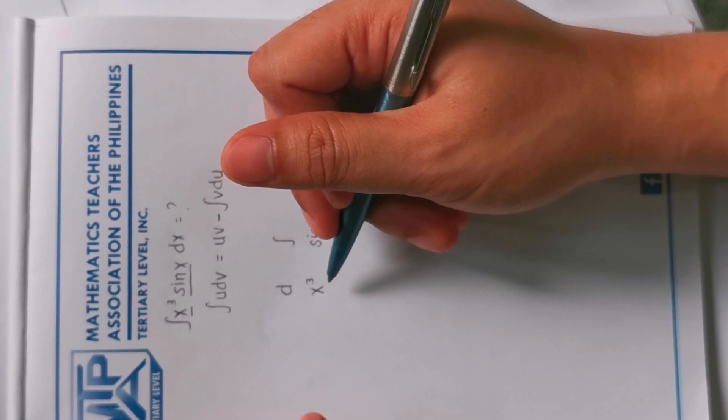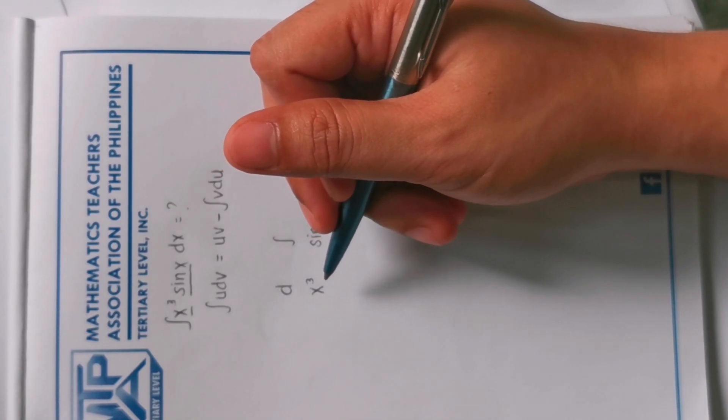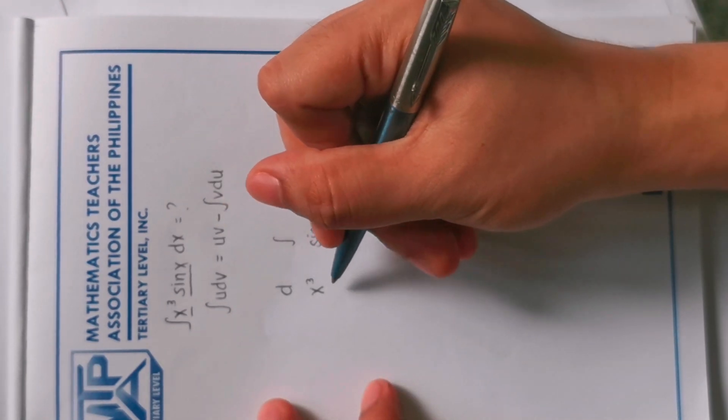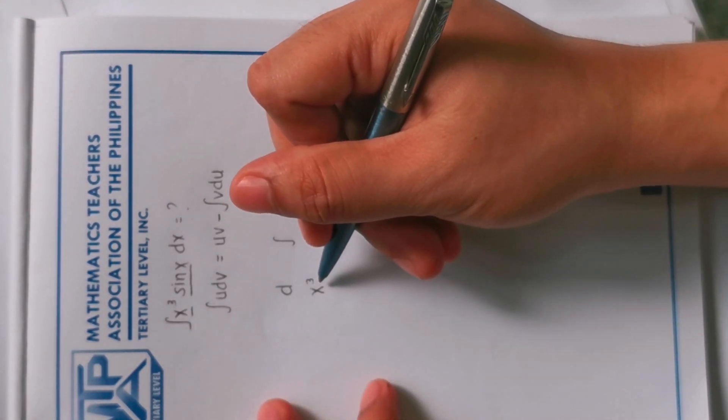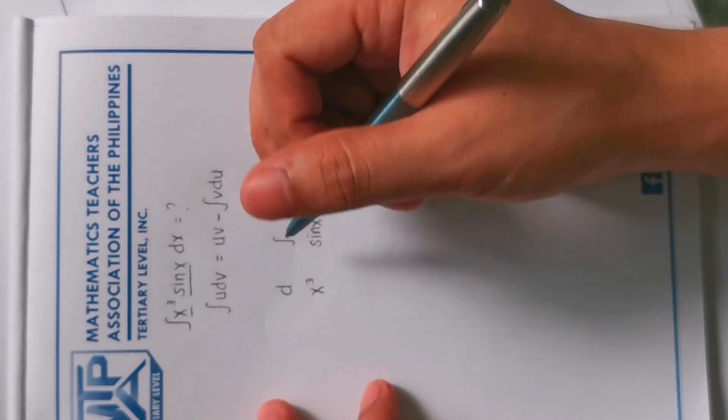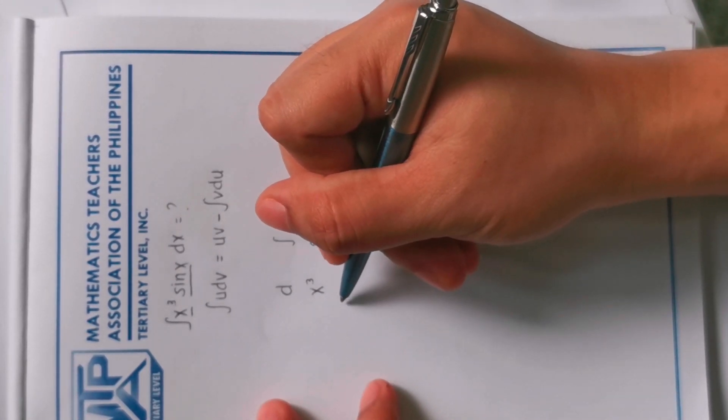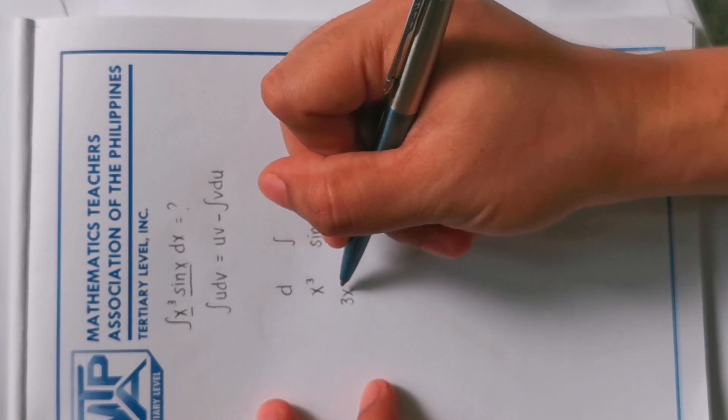So we have x cubed under the differential column, so under the integral column is sine x. So first we will differentiate x cubed until it becomes zero or the exponent of x becomes zero. So we have x cubed here, so the differential of x cubed is 3x squared.